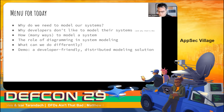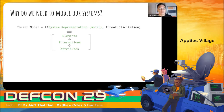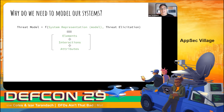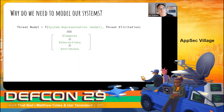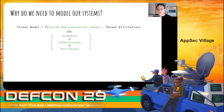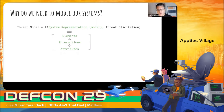Why is this important? Why do we even need to model our systems? Developers know what they're building, right? A threat model is a function of whatever representation of the system we put together, plus the threat elicitation. We as security experts are very good at the threat elicitation — we know how to figure out what could possibly go wrong. Where we and developers are sometimes not so good is on the system representation: the set of all elements in the system, the way they interact, and the attributes they have.